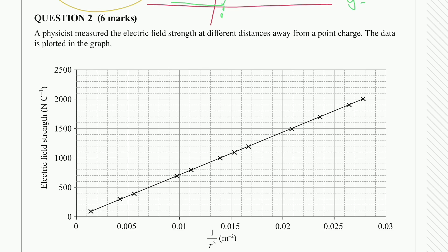Now question two, a physicist measures the electric field strength at different distances away from a point charge. The data is plotted in the graph below.